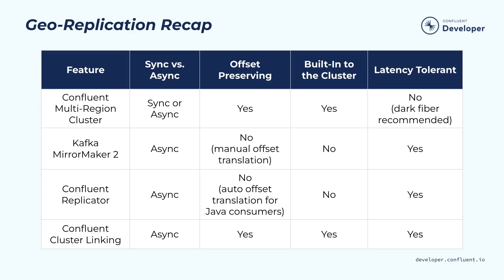With all those choices, how do you choose among the different geo-replication options? This table summarizes the differences. In general, if the two data centers are not too far from each other, multi-region cluster is your best choice because it supports both synchronous and asynchronous modes and preserves offsets. If the two data centers are too far apart, the best option is cluster linking because it preserves offsets and makes replication much more efficient. That's the end of this module — thanks for listening.